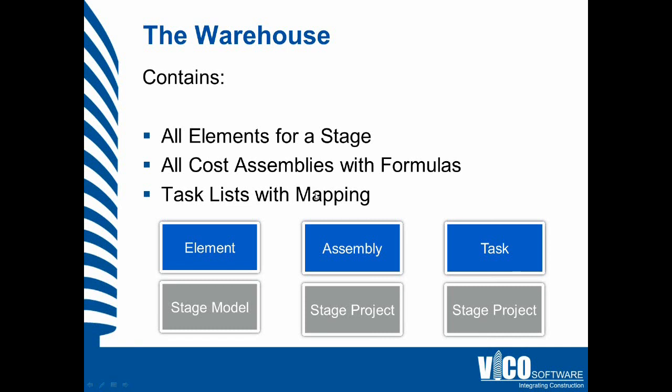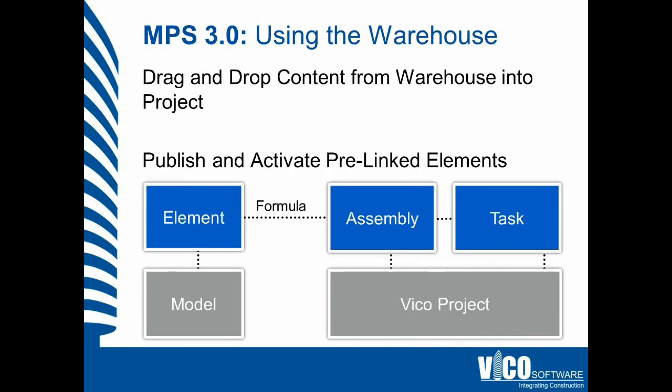There's also a task list with mapping. When you know which cost assemblies, components, and quantities you're going to get out of your building information model, you can predefine the list of tasks that can derive their quantities from that data set. This means elements will be named correctly, so there's no surprise when you get to the estimating stage and need to find out which model element needs to be linked to which cost estimating component in the assembly.